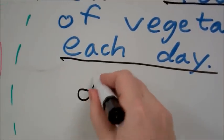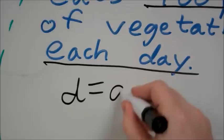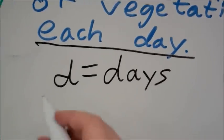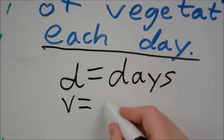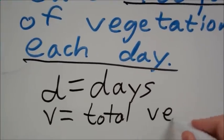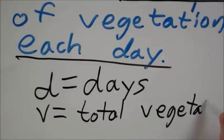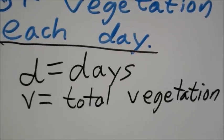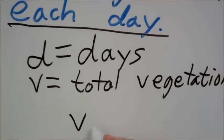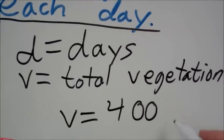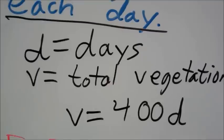Let's have d be the number of days, and let's have v equal the total vegetation. So our total vegetation, v, is going to equal 400 pounds times the number of days, d.